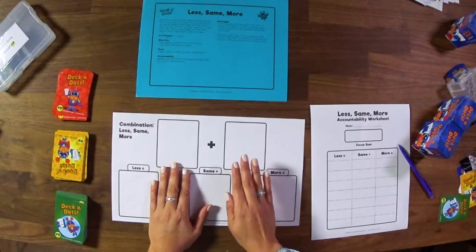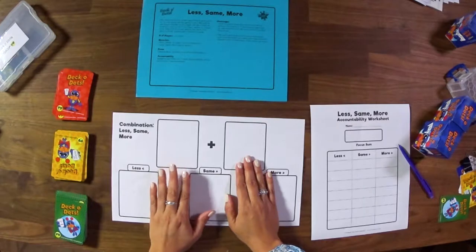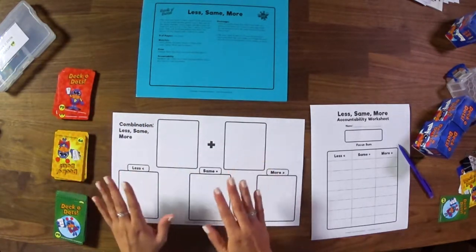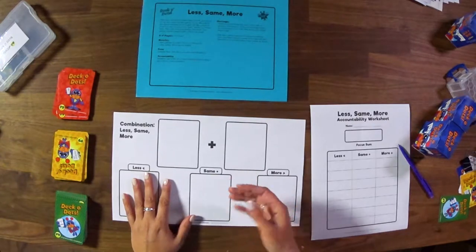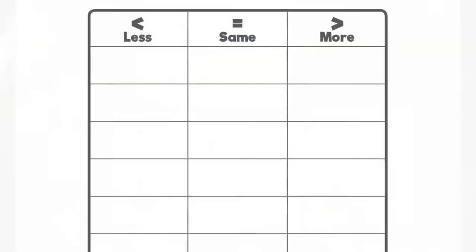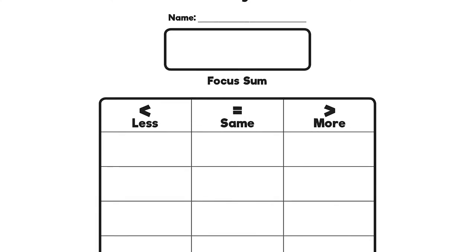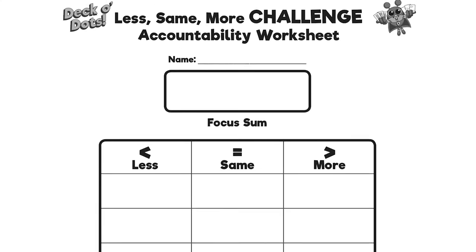Teachers can either decide what that combination is or the sum of that combination is for students or you could let them draw. Just be really careful while you're playing this game that you understand how many cards are in the set of Deco Dots that you're working with. So for example, if I was going to come up with a sum that's too high for maybe using the red deck or too low, you want to make sure you're kind of understanding the highest quantity in that deck. There's an accountability sheet that's very similar to the regular less, same, more as well, but they're deciding on what that focus sum is going to be.